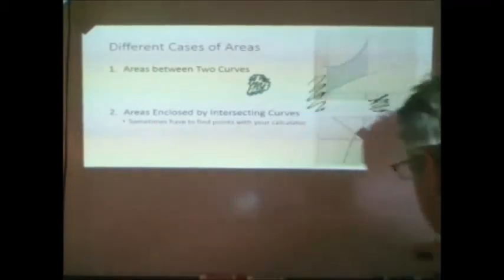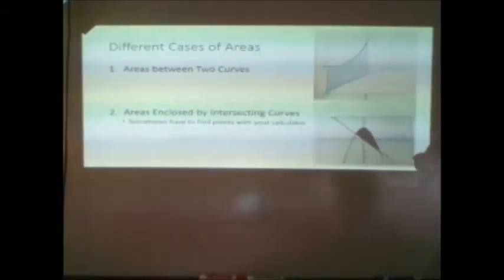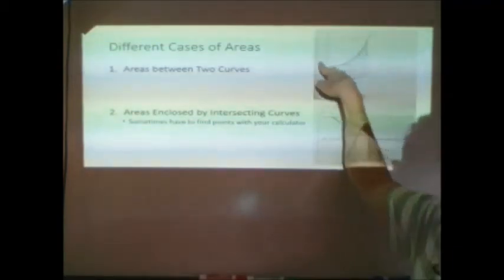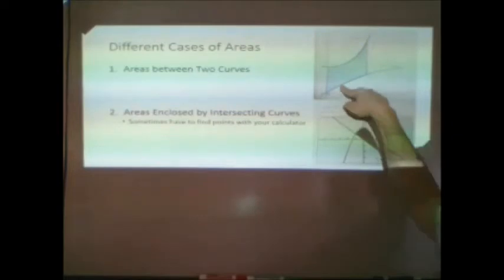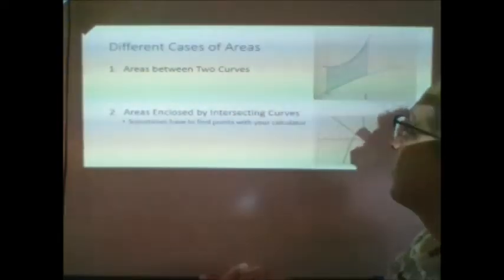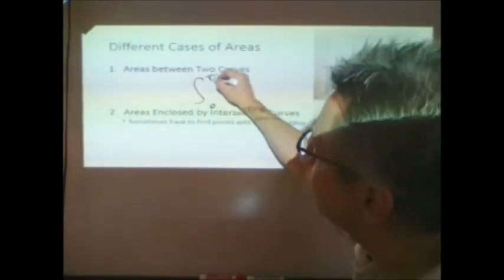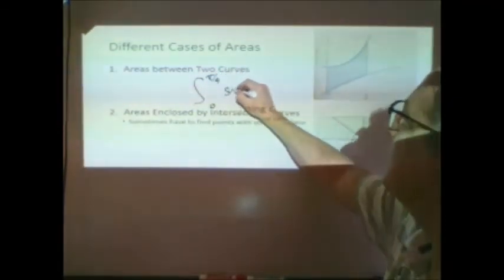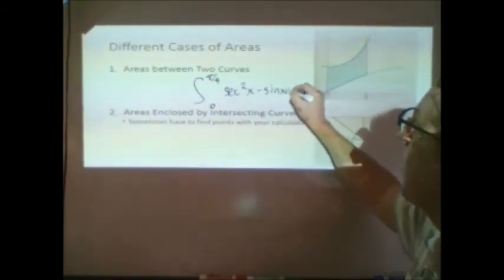The four cases are, well, the one I just talked about, finding the area between the curve. This is a secant squared curve, and this is a sine x curve. And so, if we wanted to find the area between those two curves, we just take the integral from 0 to pi over 4 of the secant squared curve minus the sine curve.